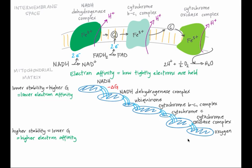If electrons moved from low to high affinity all at once, too much energy would be released in one step, and only a fraction of it would be harnessed to pump hydrogen ions across the membrane. The rest of the energy would be released as heat and unable to be stored for cellular work.